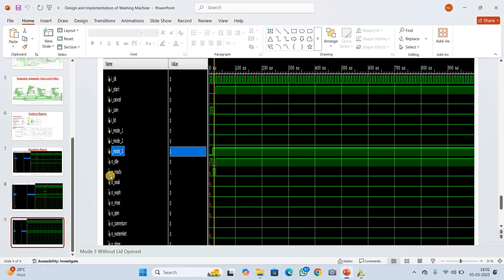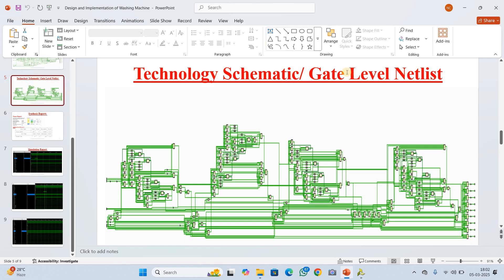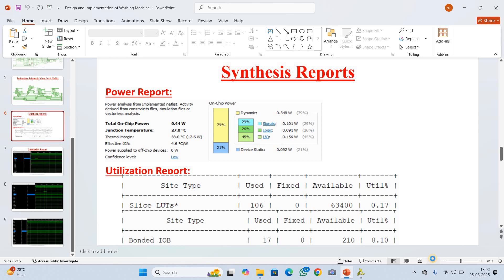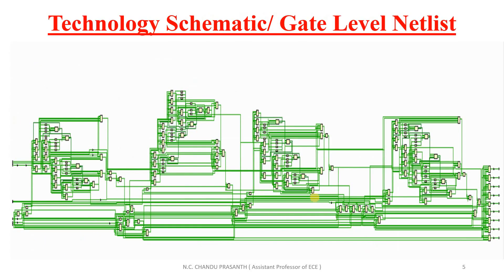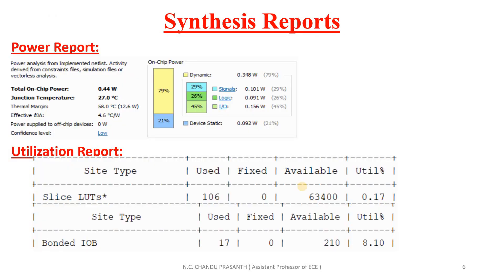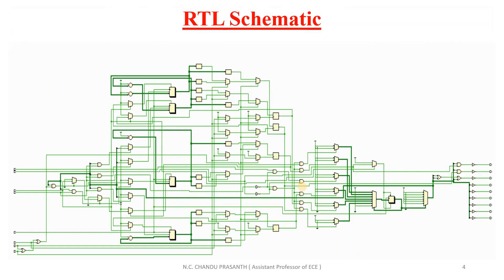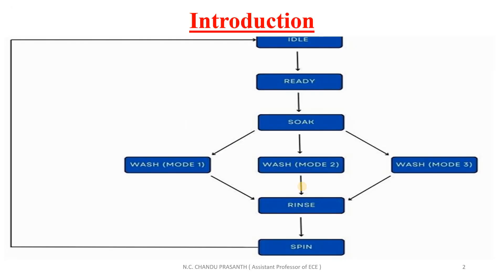Viewing the synthesis report and the gate-level schematic after synthesis: the total on-chip power is 0.44 watts, which includes both static power and dynamic power. In the utilization report, total slice LUTs are 53,400, of which 106 are used — a utilization percentage of 0.17%. The bonded IOB utilization is around 1.0%. This also shows the RTL schematic and FSM view. That's it. Thank you.